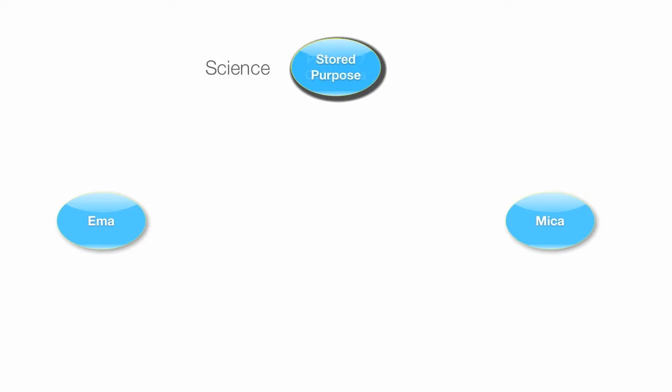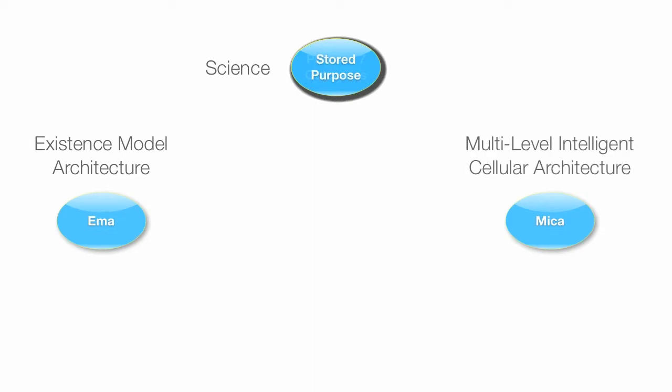So first, with those architectures, as we mentioned, EMA. EMA is our existence model. It's the reason why something intelligent exists. It's that definition of self as identity, and the mechanism that enables it to maintain that self.